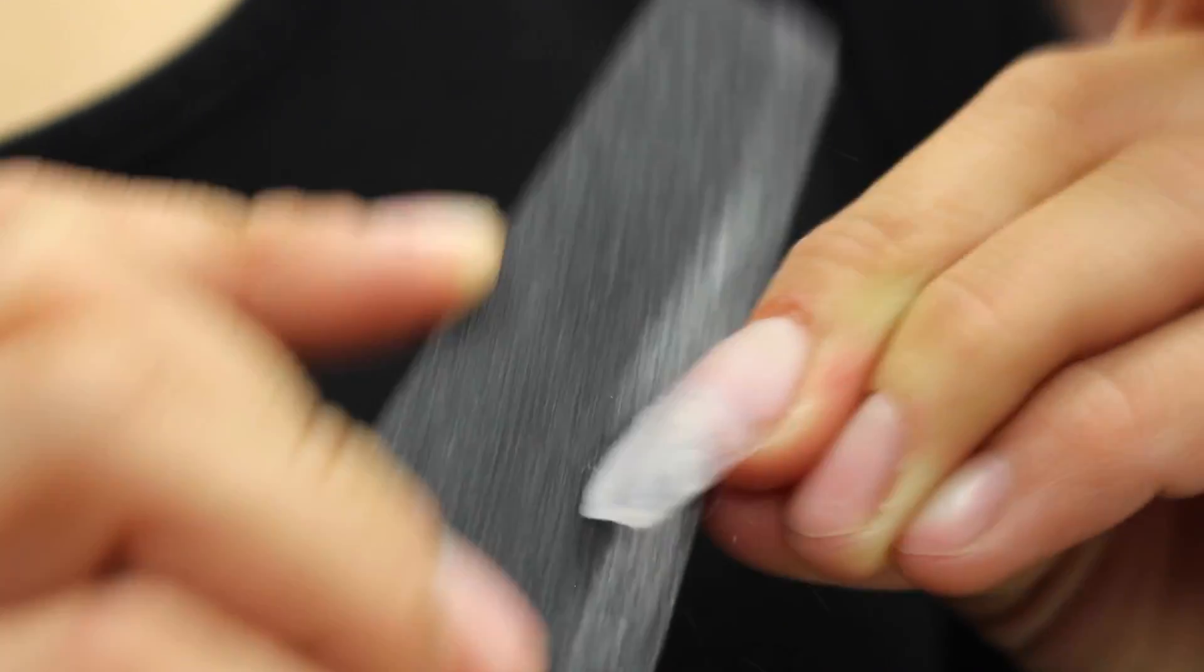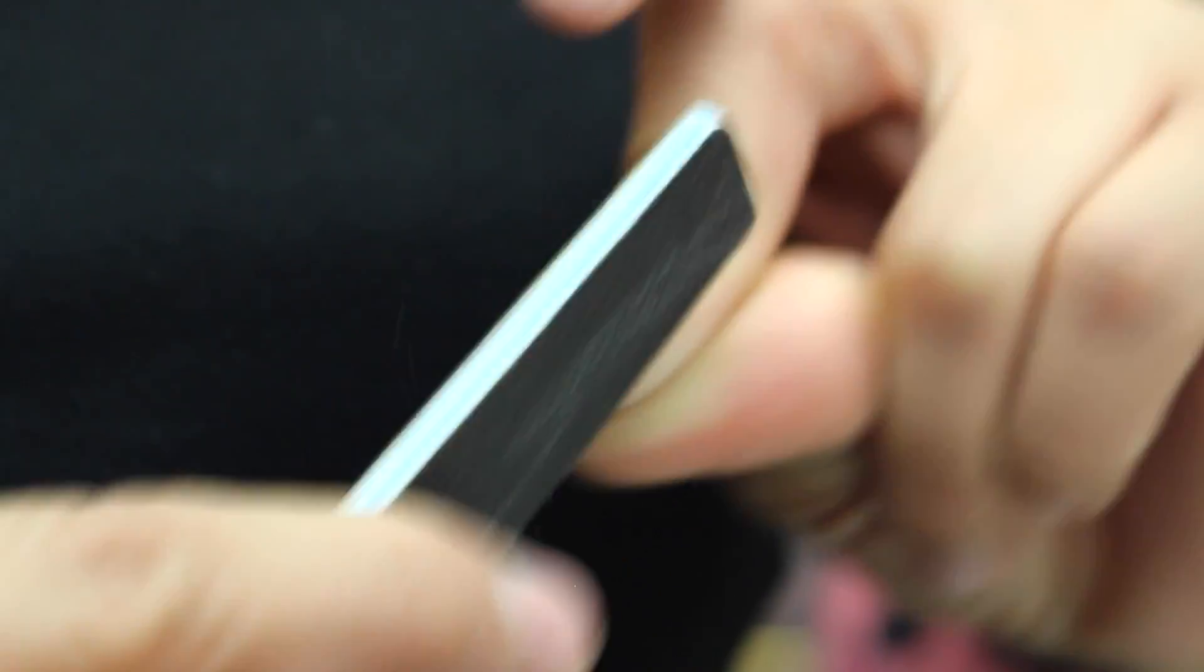I'm going to take my file and I'm going to start on the edges, and I like to go in a 45-degree angle and just file until you get those edges nice and straight. I'm going to do the same with the tip of the nail. I turn my brush straight up and down and it just files it really nicely.